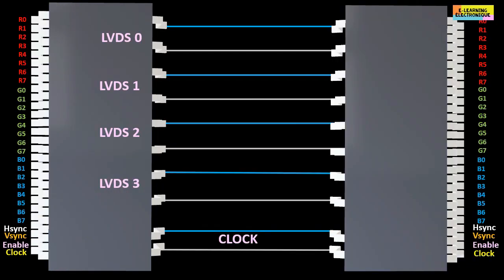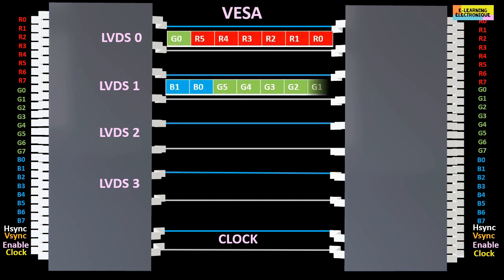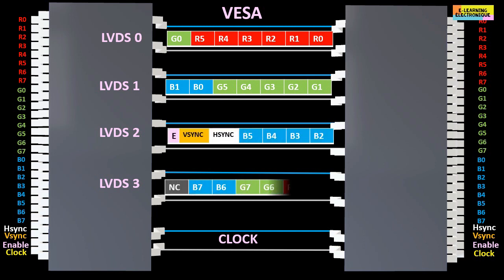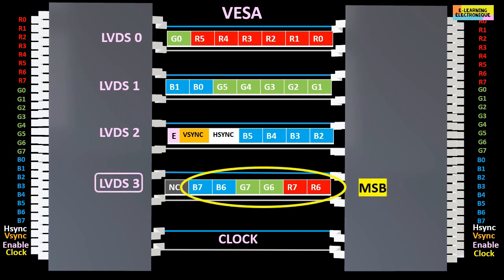Now we come to the notion of VESA and JEIDA. On the diagram, we see the order of passage of the bits in each pair of LVDS cables. Each line carries seven bits. In the VESA standard, all the two MSB of each color are put together on one of the pairs of wires, named here LVDS 3. On this line, the empty box has been named NC for not connected.